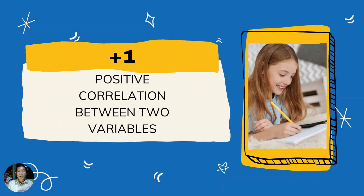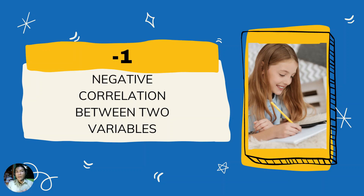The correlation coefficient shows the correlation between two variables. It is a statistical measure that calculates the strength of the relationship between two variables, with a value measured between negative one and positive one. When the correlation coefficient is close to positive one, there is a positive relationship between the two variables. When it is close to negative one, there is a negative correlation. If the value is close to zero, there is no relationship between the two variables.